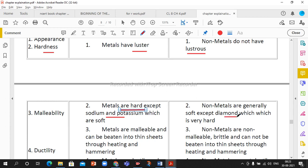Non-metals are generally soft except diamond. Diamond is very hard. Malleability means metal can be beaten into sheets. Metals are malleable and non-metals are non-malleable or we can say brittle. Brittle means when you beat it, it can be broken down into powder form.